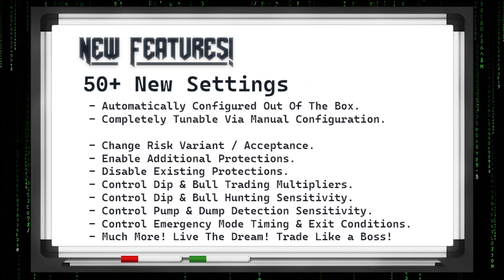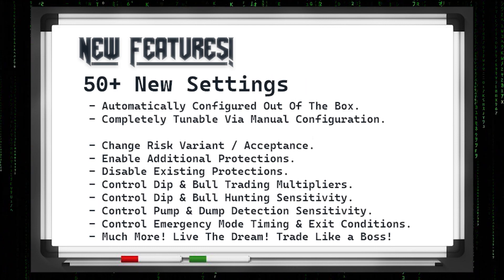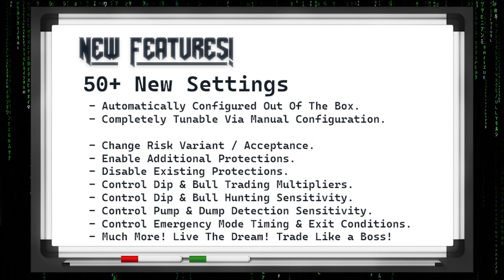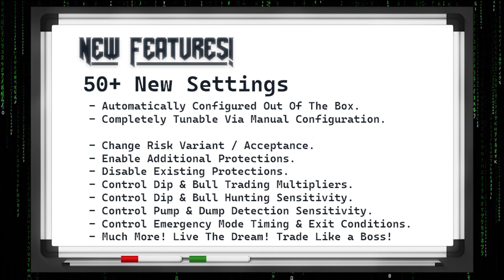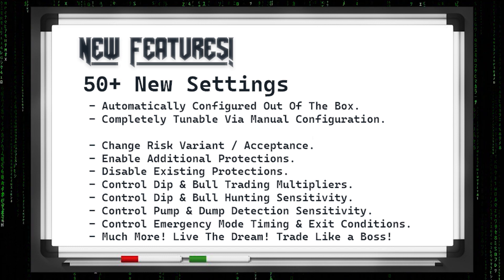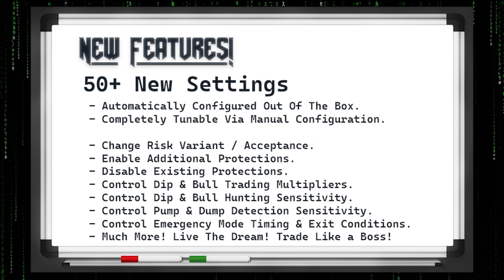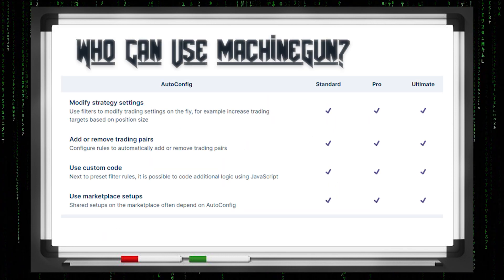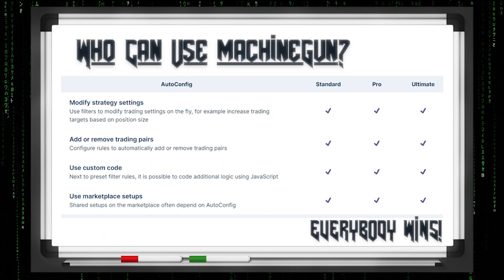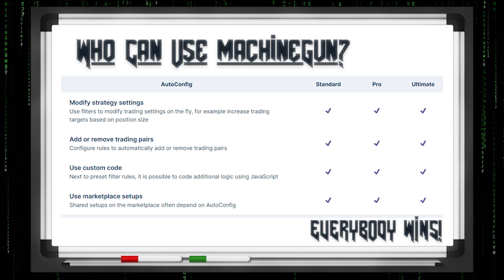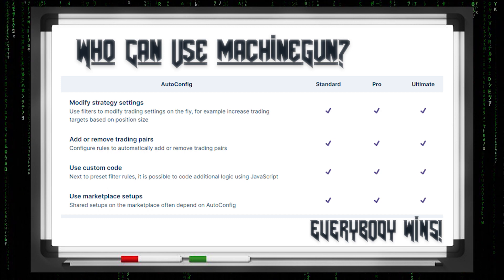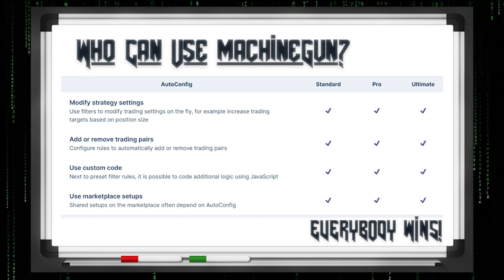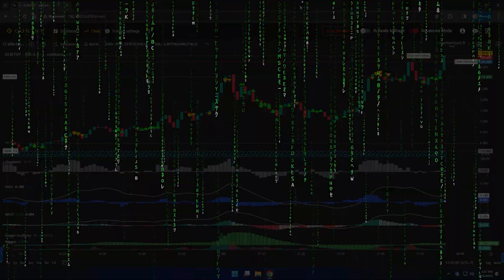Overall there's over 50 new settings — they're all pre-configured, but if you want to fine-tune to your needs, everything is left in so you can control every bit of MG yourself. So who can use Machine Gun? Everybody can. Every license of GunBot can use an auto-config file and that's what we build on. Everybody wins — everybody can use Machine Gun.